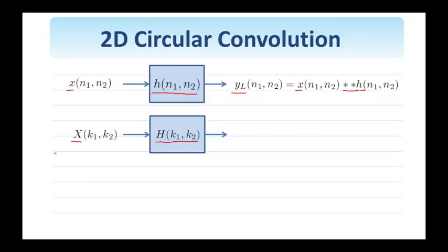And I form the output of this system by multiplying the corresponding DFTs. So Y(k1, k2), the DFT of the output, equals the DFT of the input times the DFT of the impulse response of the system.